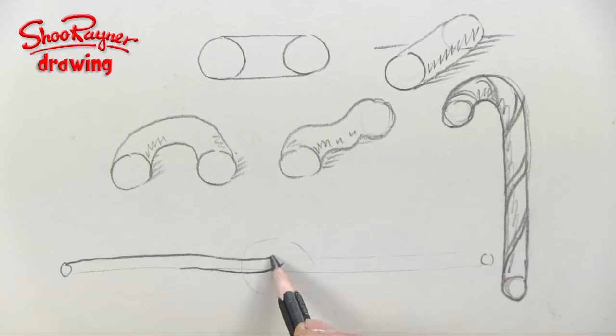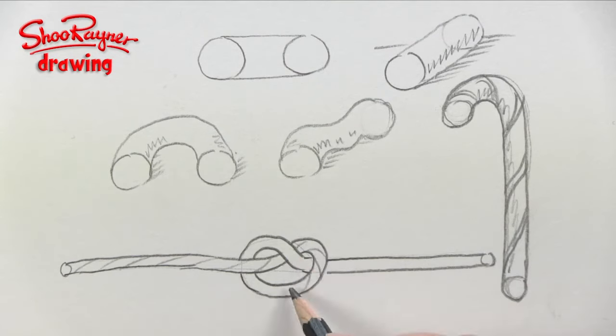A piece of string is a long flexible cylinder which we can even draw tied up in a knot.